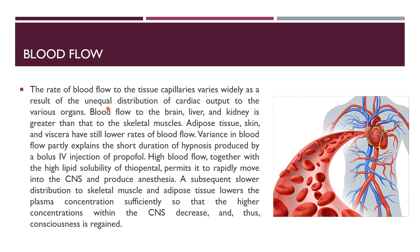Blood flow: The rate of blood flow to the tissue capillaries varies widely as a result of the unequal distribution of cardiac output to the various organs. Blood flow to the brain, liver, and kidneys is greater than that to the skeletal muscles. Adipose tissues, skin, and viscera have still lower rates of blood flow. Variance in blood flow partly explains the short duration of hypnosis produced by a bolus IV injection of propofol. High blood flow, together with the high lipid solubility of thiopental, permits it to rapidly move into the central nervous system and produce anesthesia.